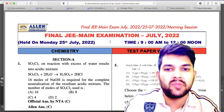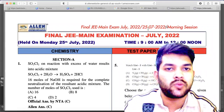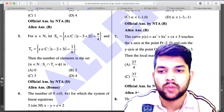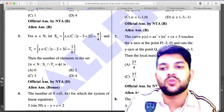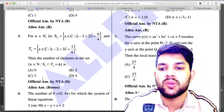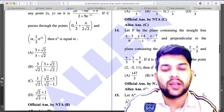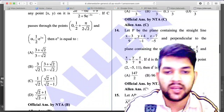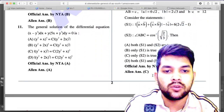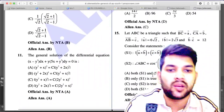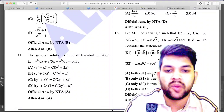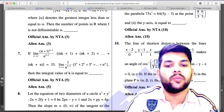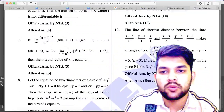Now for 25th July Shift 1 mathematics: question number 3 will be treated as bonus — the question statement has some problem and will likely be dropped. Question number 14: LN answer is C, official NTA answer is D — if you answered C, you will get marks. Question number 15: the correct option is C as claimed by LN, but NTA provided D. Question number 10 (numerical): this will also be treated as a bonus question as claimed by LN.